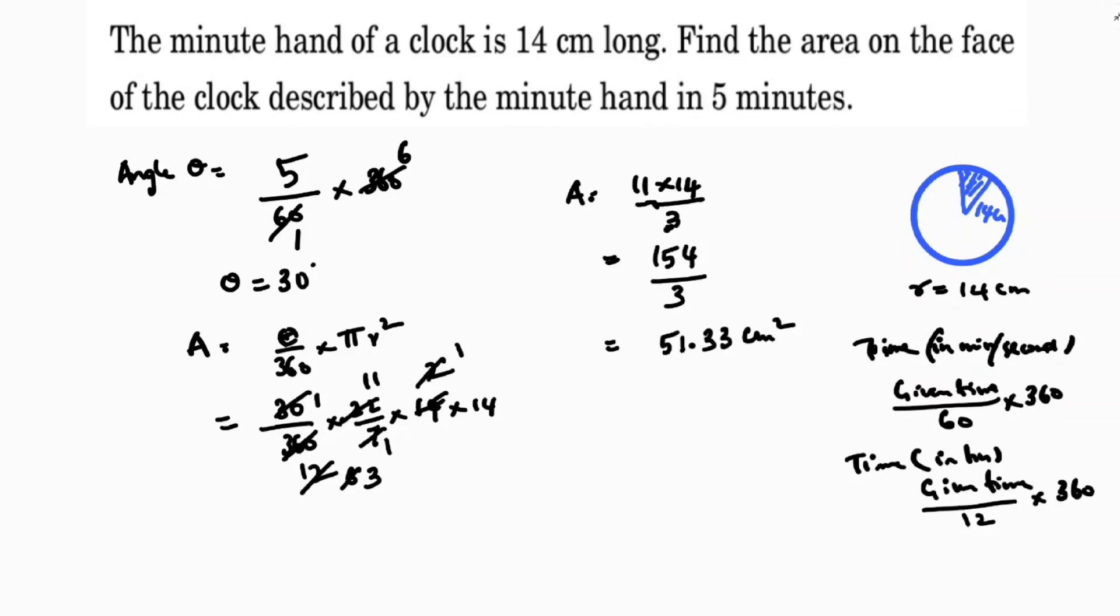So this is the area on the face of a clock described by the minute hand in 5 minutes. The minute hand length is 14 centimeters, so I consider it as radius 14. Then I got the angle - given time which is 5 minutes. Minutes is there, so I took 60 into 360, I got theta. Then direct area of a sector formula: theta by 360 into pi r square.